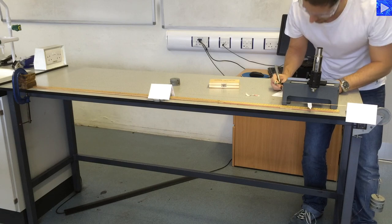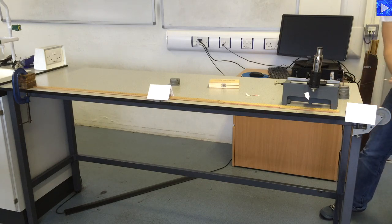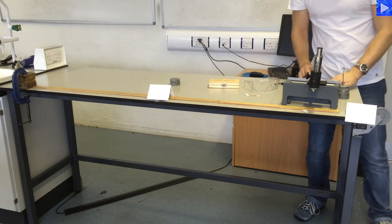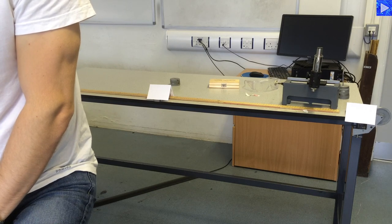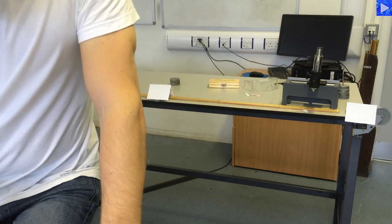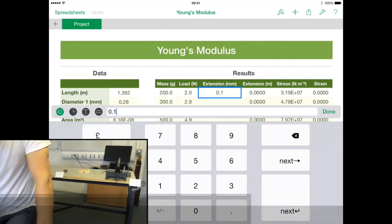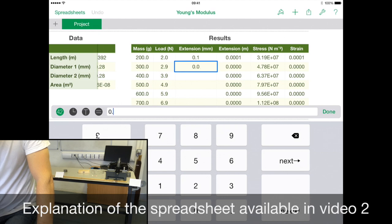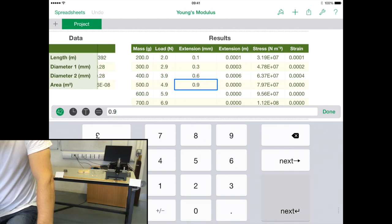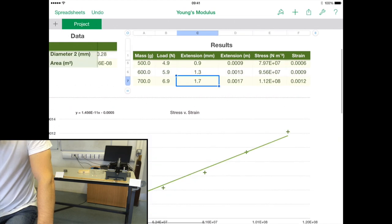Okay so I'll take the load off and then work out the extension of each of these. So 0.1, then 0.2 plus 0.1, that's 0.3, then 0.6, 0.9, 1.3 and 1.7. That's my extension.